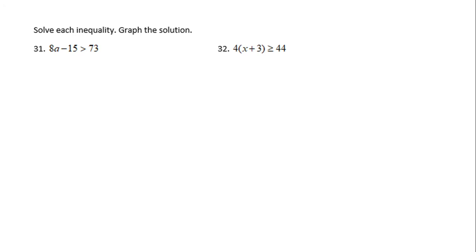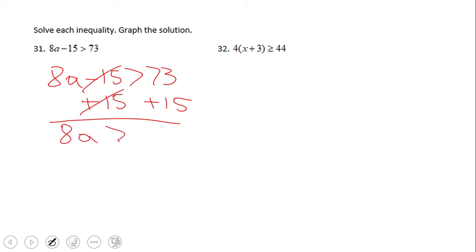Let's start by looking at number 31: 8a minus 15 greater than 73. Like I said, if you know how to do equations, this is pretty similar. We're going to add 15 first to get rid of the minus 15, and you get 8a greater than 88. The last step: divide by 8, and we have a equals 11. I'm sorry, it's a greater than 11.